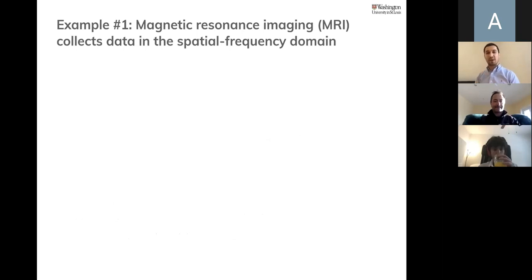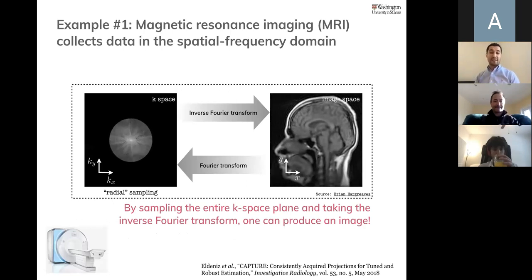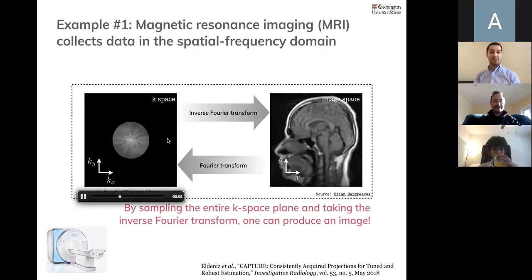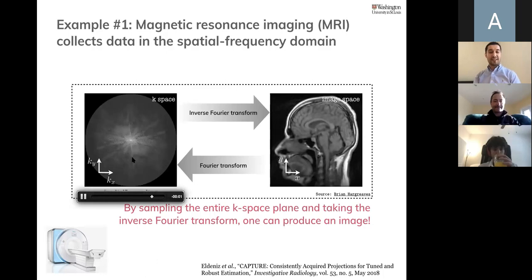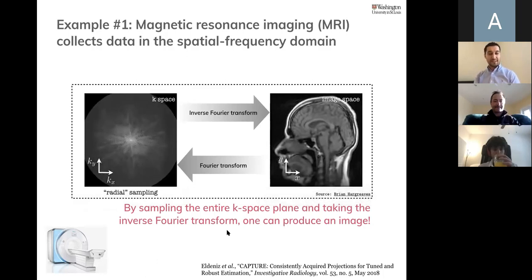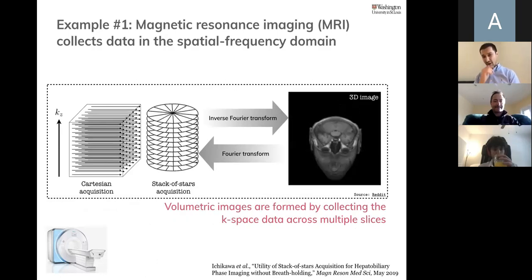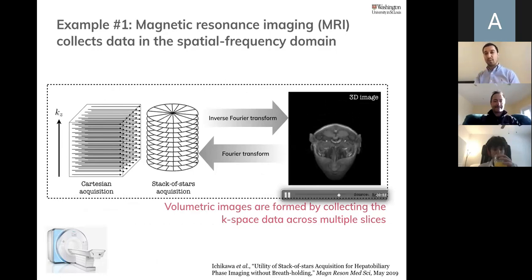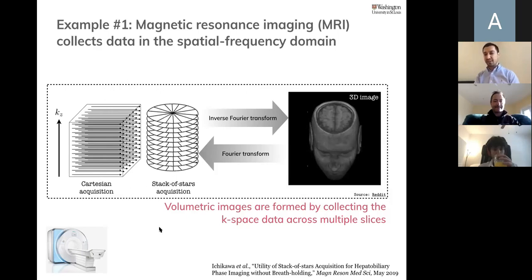Let me give two concrete examples I've been actively working on at WashU. The first is magnetic resonance imaging. In MRI, data is not collected in image space like photography, but in the so-called k-space, which is essentially the Fourier or frequency space of data. It's collected sequentially, and by taking the inverse Fourier transform you can form the image. We're really going to talk about 3D MRI, where you collect frequencies along slices to form a volumetric image. Data can be acquired in radial or Cartesian acquisitions and so on.